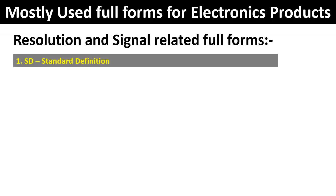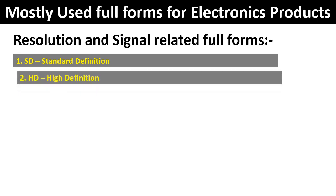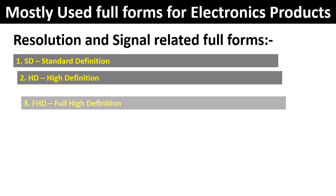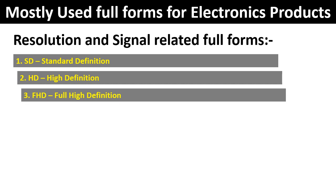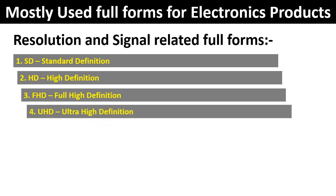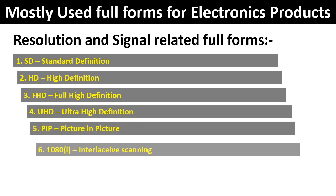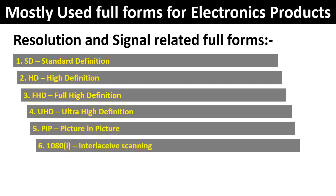Resolution and Signal Related Full Forms. 1. SD — Standard Definition. 2. HD — High Definition. 3. FHD — Full High Definition. 4. UHD — Ultra High Definition. 5. PIP — Picture in Picture.